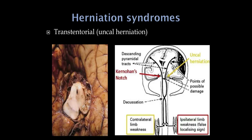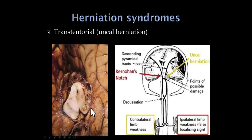Now the herniation syndromes. In uncal or transtentorial herniation, the uncus pushes on the third nerve in the interpeduncular fossa, producing an ipsilateral third nerve palsy. Compression of the cerebral peduncle gives the patient a contralateral hemiplegia — a cross-finding indicating the lesion has affected the midbrain.